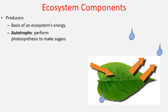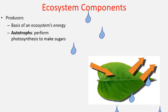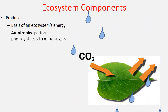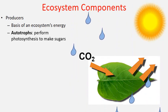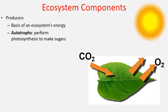Producers are the autotrophs in an ecosystem — those that are able to perform photosynthesis in order to make sugars. We need three basic ingredients: water, carbon dioxide, and sunlight for autotrophs to do photosynthesis. They produce some oxygen as waste, but more importantly they produce glucose. That's the prize of photosynthesis — that's why they're called producers. This glucose is the energy they produce for the ecosystem.